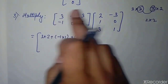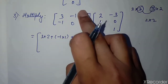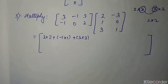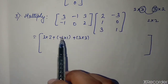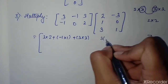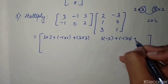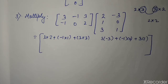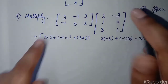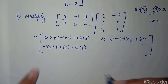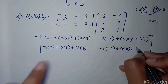Now we multiply. For the first element: 3 into 2 plus minus 1 into 1 plus 3 into 3. For the second element in the first row: 3 into minus 3 plus minus 1 into 0 plus 3 into 1. For the first element in the second row: minus 1 into 2 plus 0 into 1 plus 2 into 3. For the last element: minus 1 into minus 3 plus 0 into 0 plus 2 into 1.